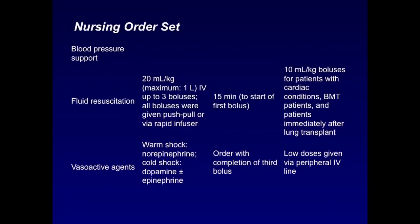In the nursing order set for blood pressure support, there has to be an assessment by the doctor to see if the patient needs fluid or not, or a little bit or a lot. The maximum amount that you give is 20 mls per kilo IV up to three boluses, with the maximum quickness being 15 minutes start to full bolus. This may or may not be needed. It can be given slower and lesser amounts. For example, 10 ml per kilogram boluses for patients with cardiac conditions, BMT patients, and patients immediately after a lung transplant. For vasoactive agents, if it's warm shock, more epinephrine should be administered through a central line. If it's cold shock, then low-dose dopamine or epinephrine can be given by a peripheral line until a central line is attained. It should be ordered with the completion of the third bolus according to this protocol, although I usually do them simultaneously. Next slide.